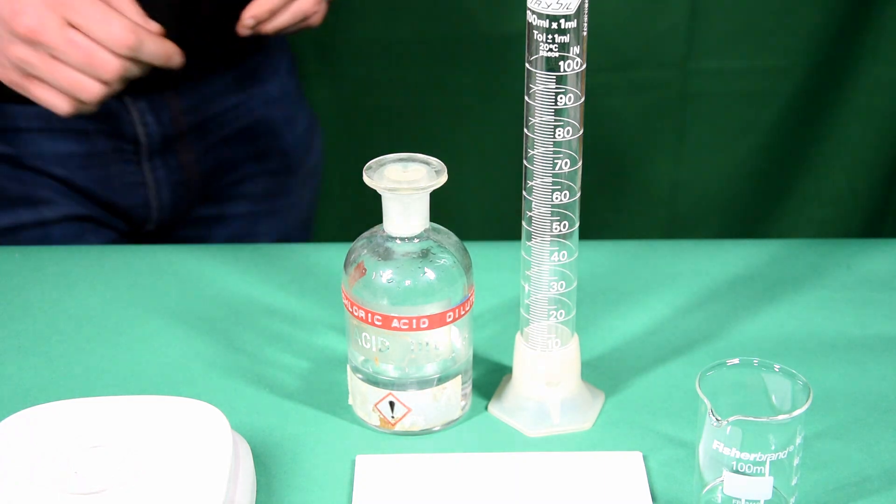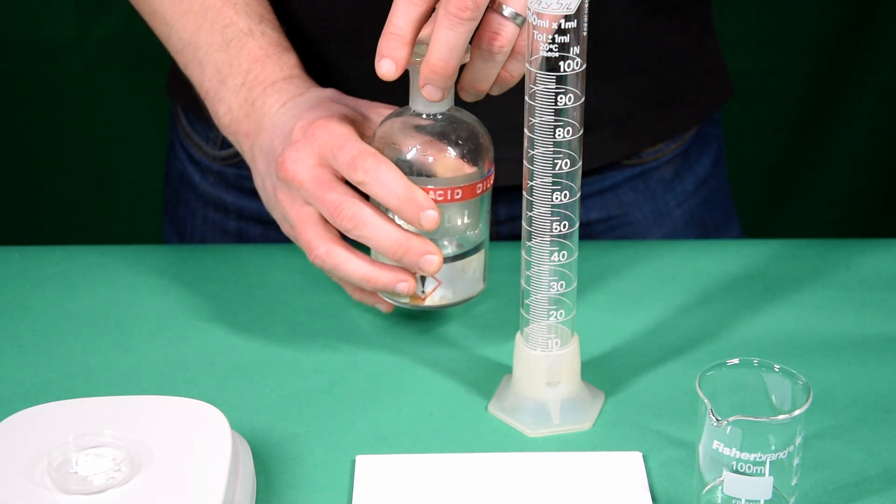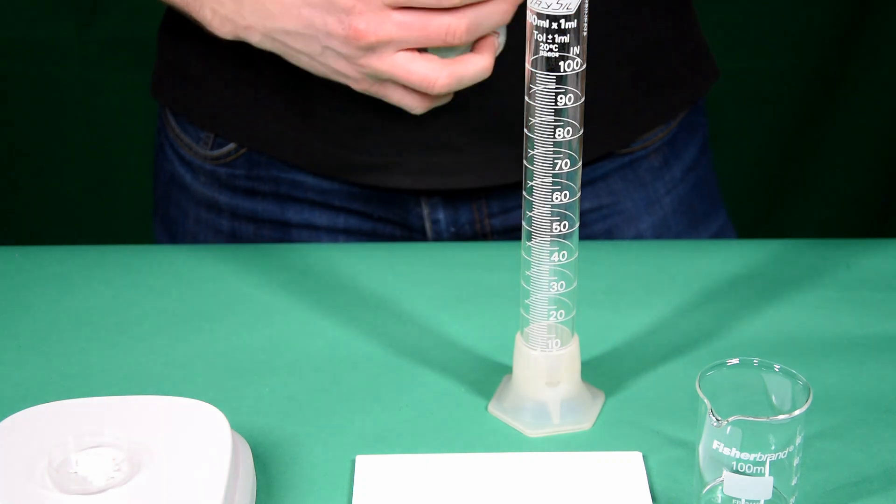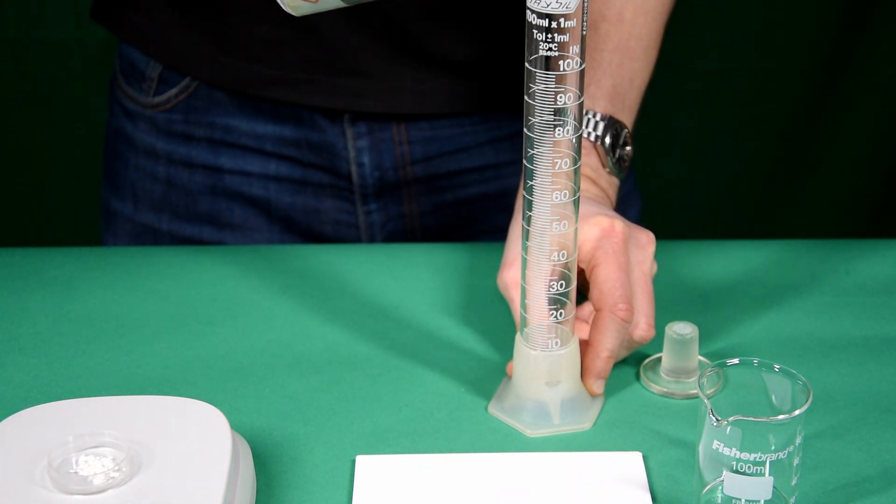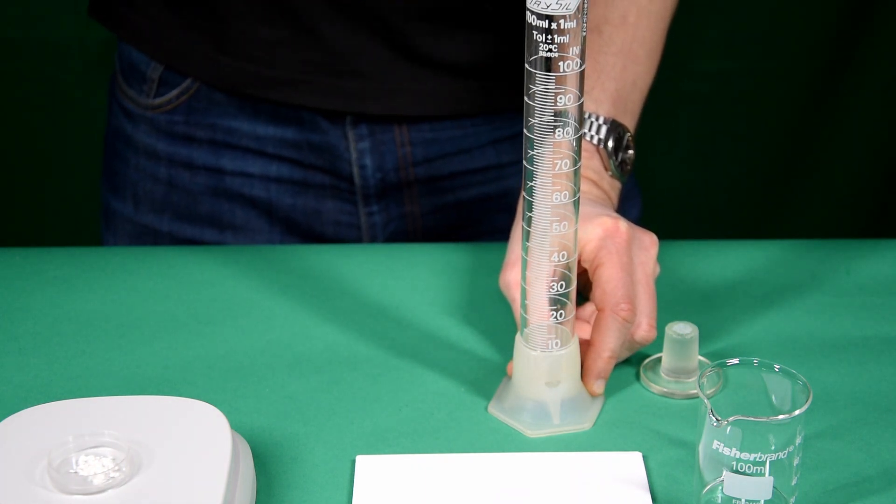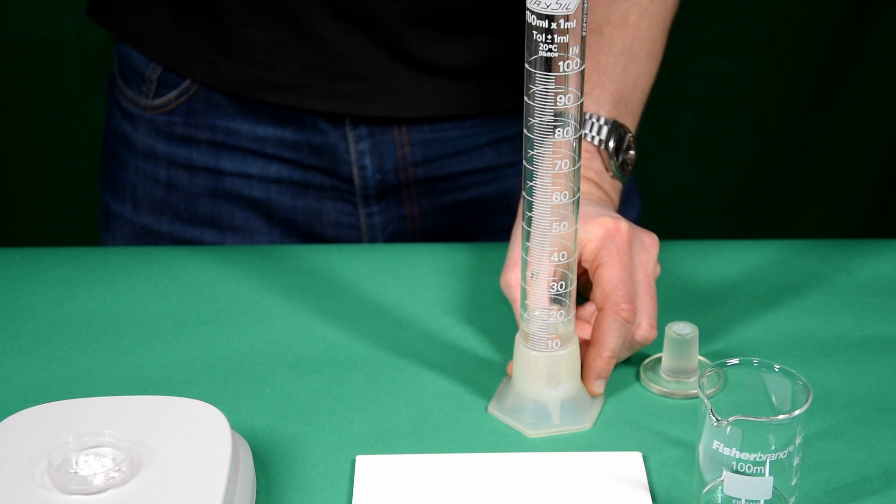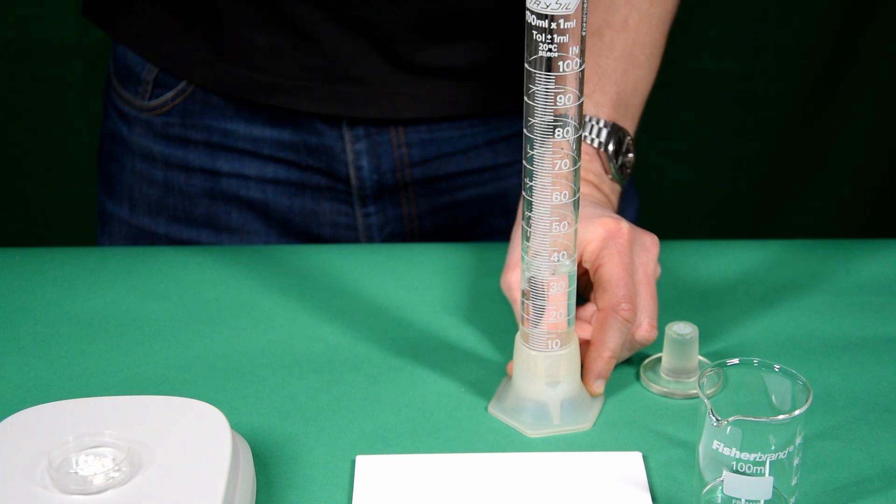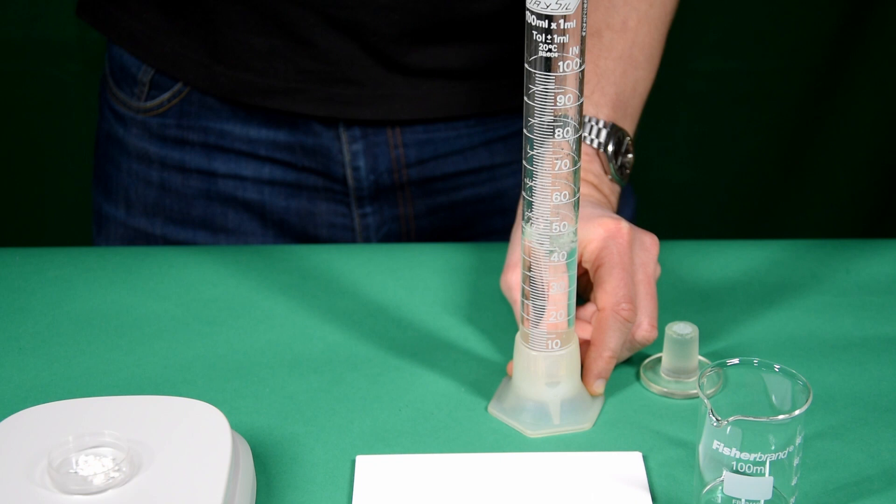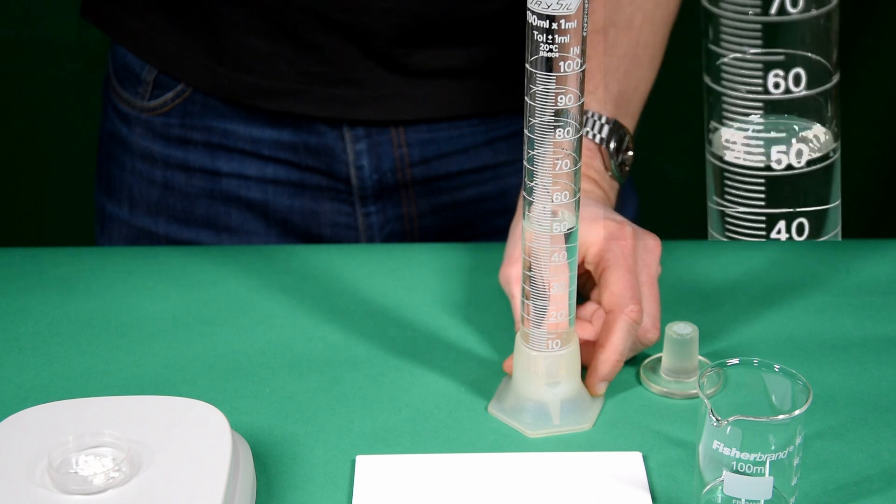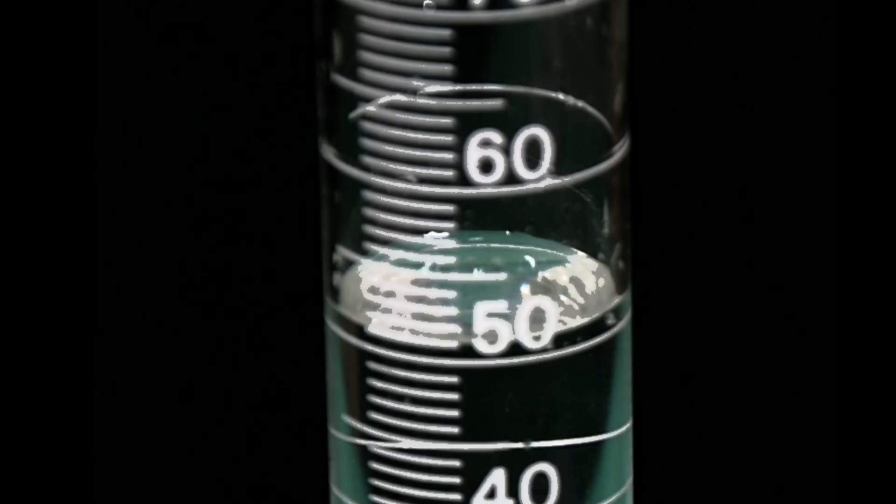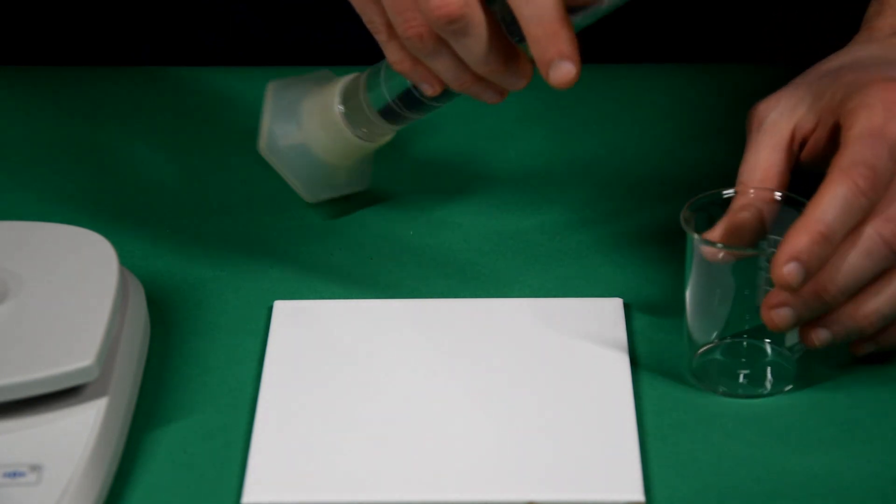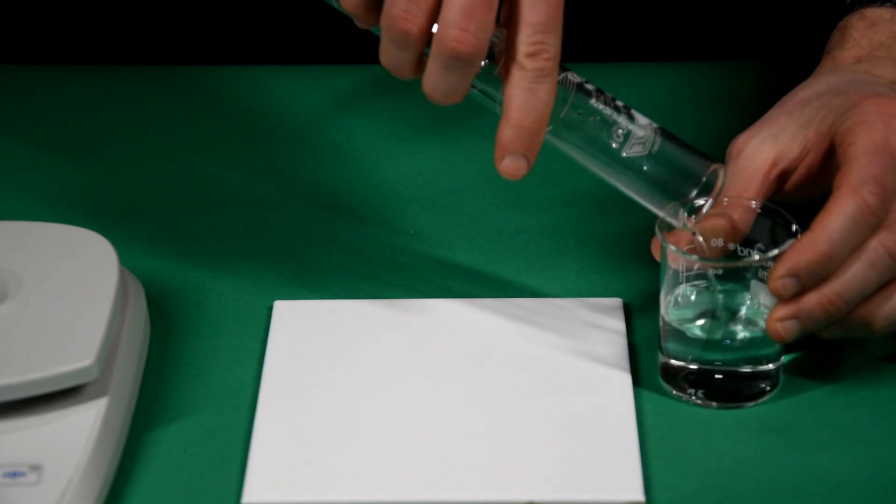And we will need 50 cm cubed of hydrochloric acid. Now this could be measured using a measuring cylinder, as we will do, but also using a burette or a pipette. We add the acid to a beaker.